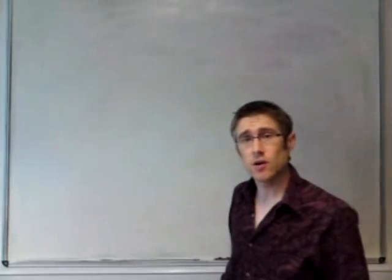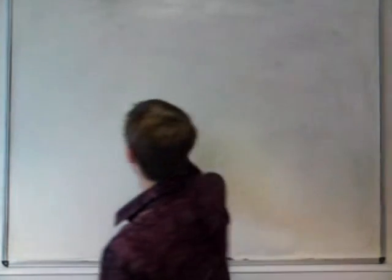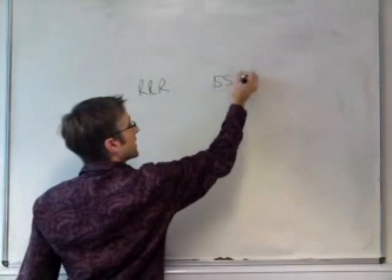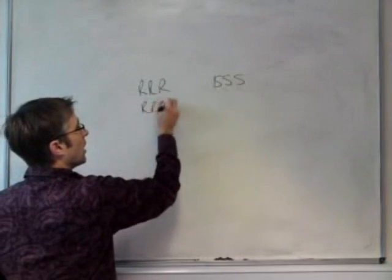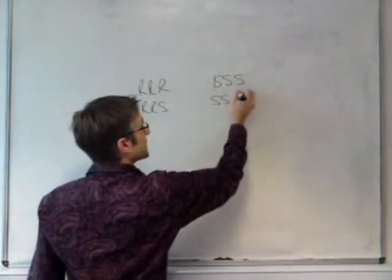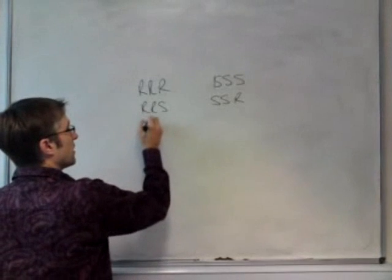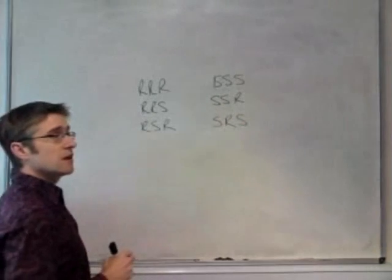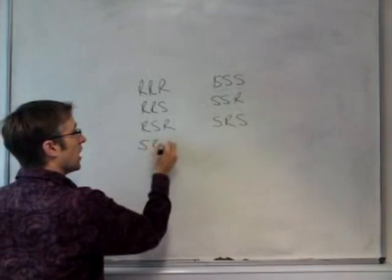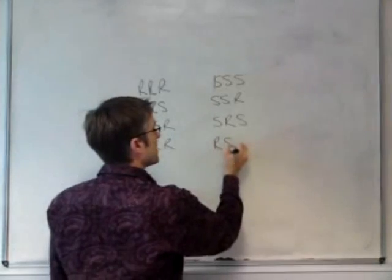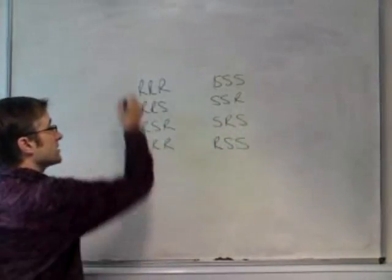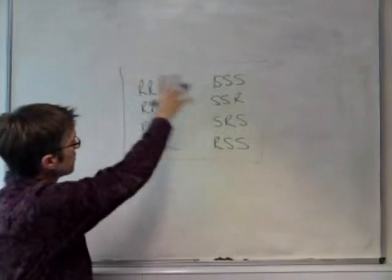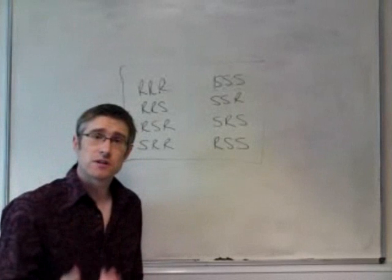So we can list all the stereoisomers of menthol as follows. We can have RRR and SSS, a pair of enantiomers. We can have RRS and SSR, a pair of enantiomers. We can have RSR and SRS, and we can have SRR and RSS. And taken together, that set of eight forms is all the possible combinations of three chiral centres.